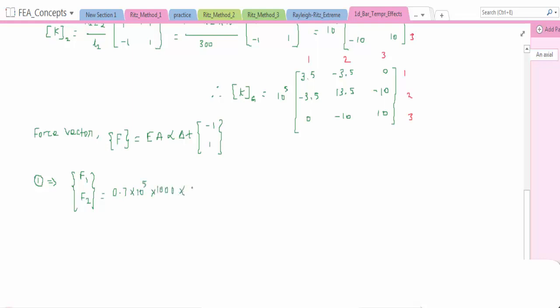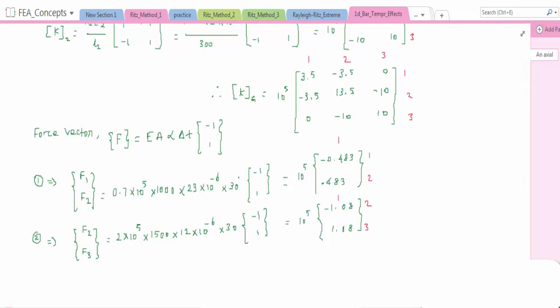F1, F2: 0.7 x 10^5, A 1000, alpha 23 x 10^-6, and delta T 30 degrees. If we simplify this, again 10^5 is common, -0.483 and +0.483 for nodes 1 and 2. Similarly for element 2, F2 and F3, the values are substituted here: 10^5 [-1.08; +1.08] for nodes 2 and 3.